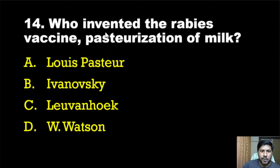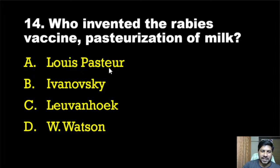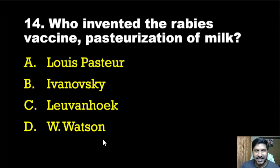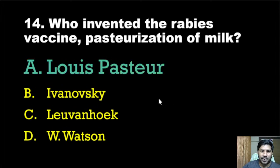Fourteenth question: Who invented the rabies vaccine and pasteurization of milk? The correct answer is option A, Louis Pasteur. The term 'pasteurization' itself comes from his name.